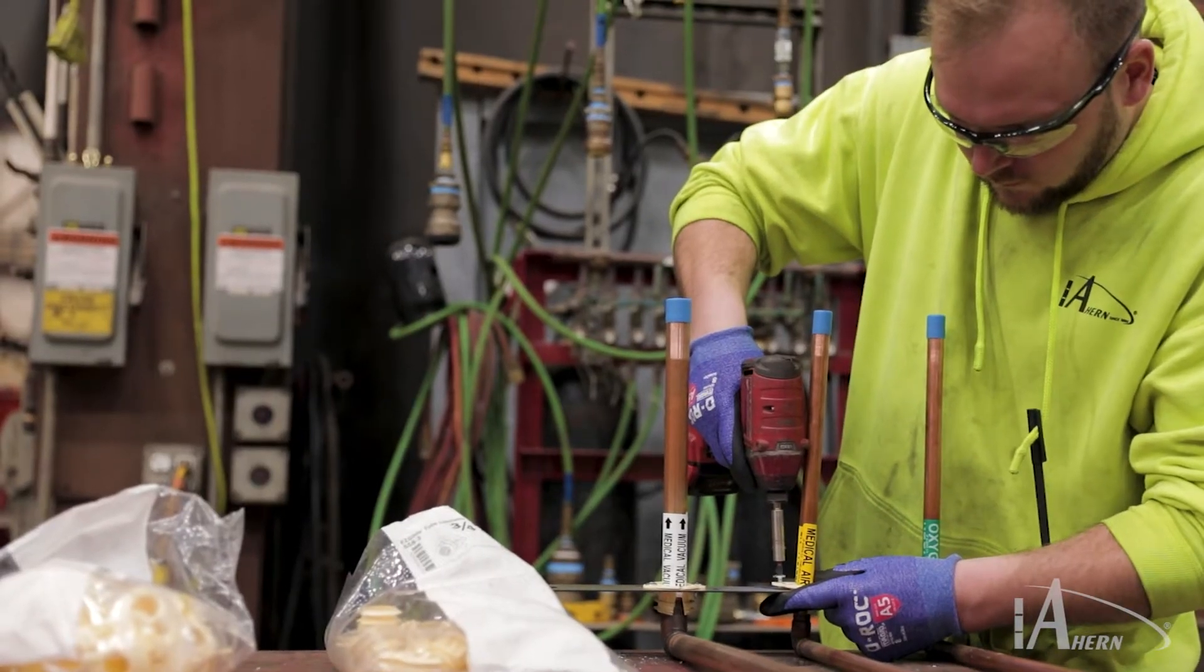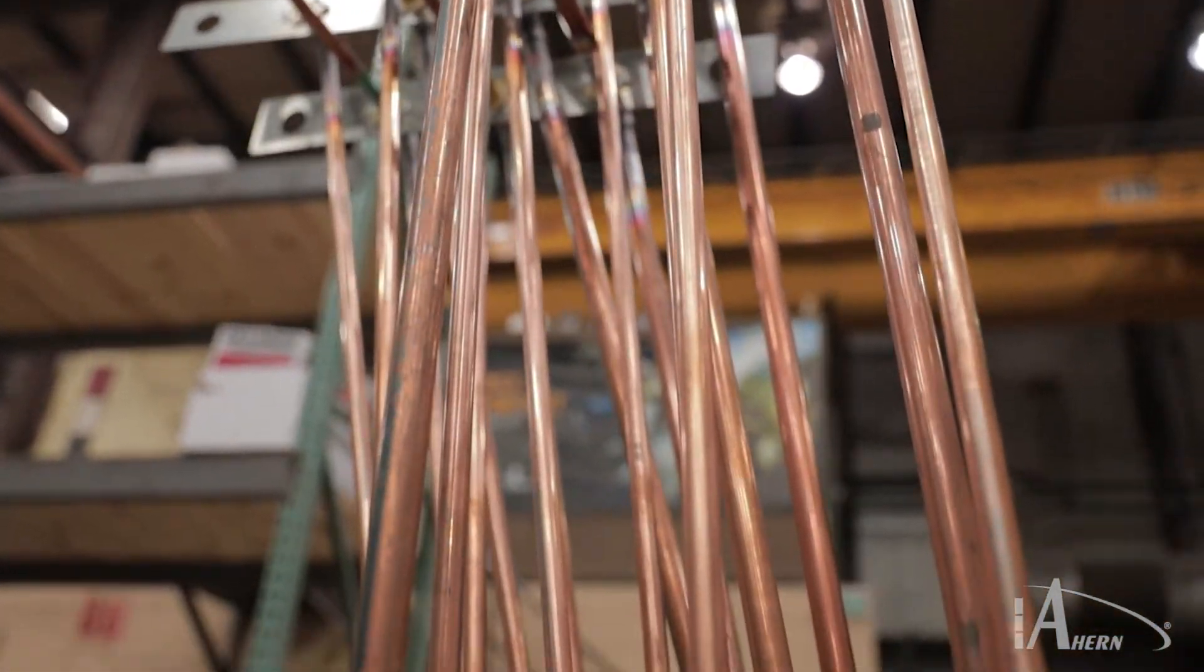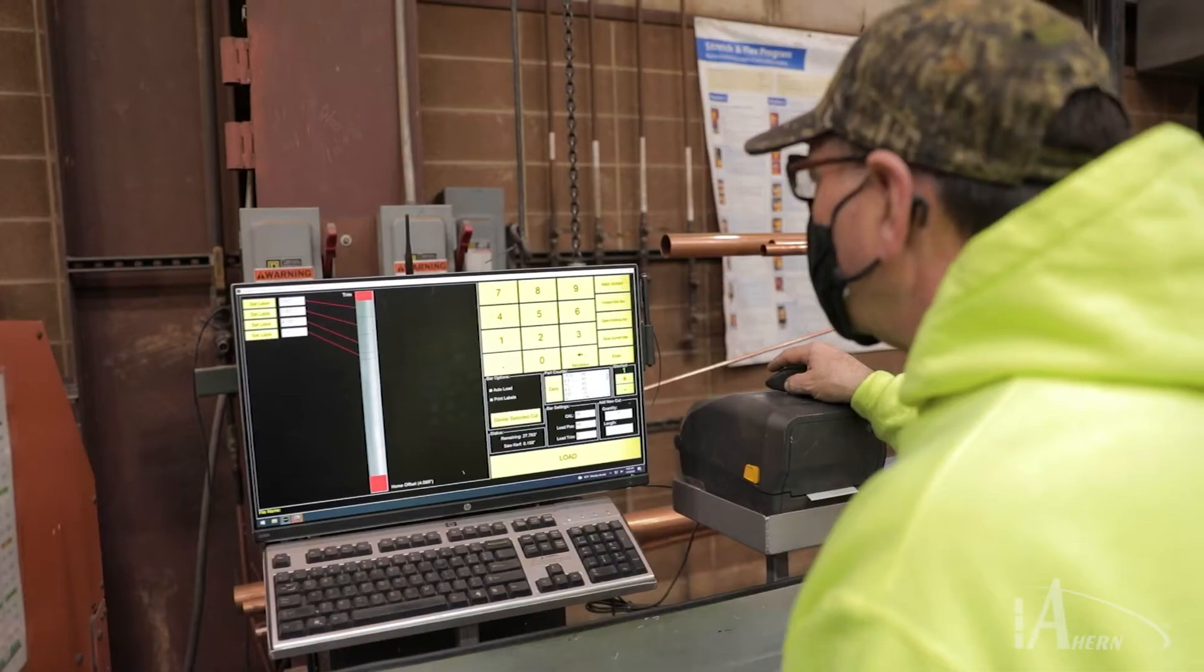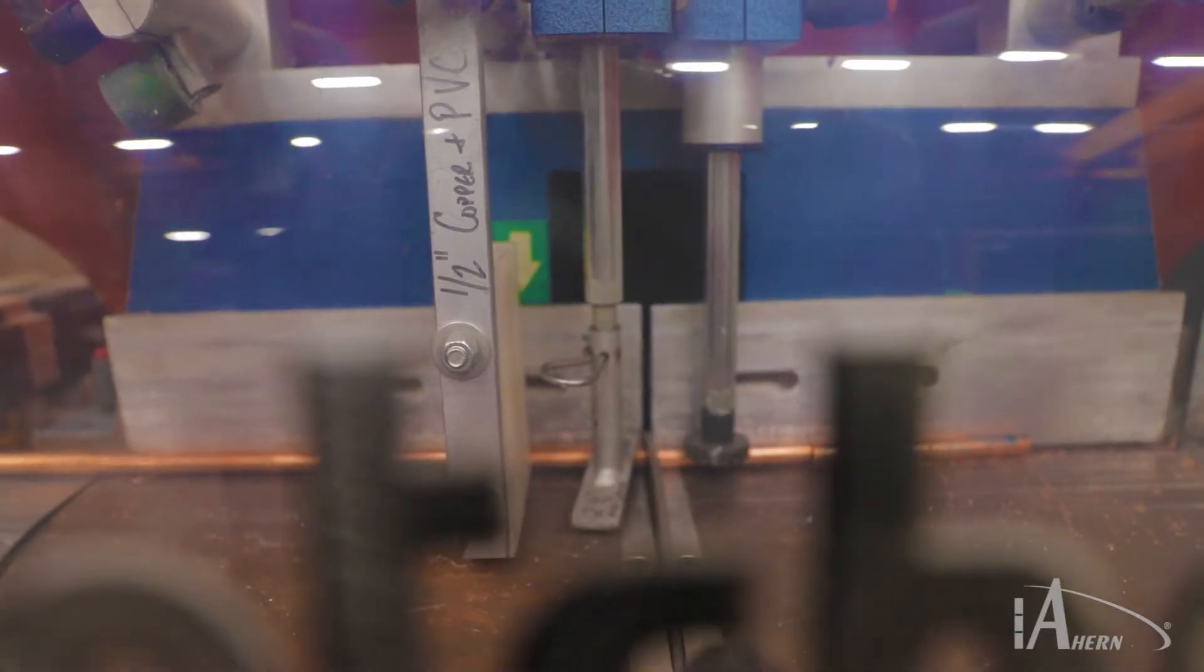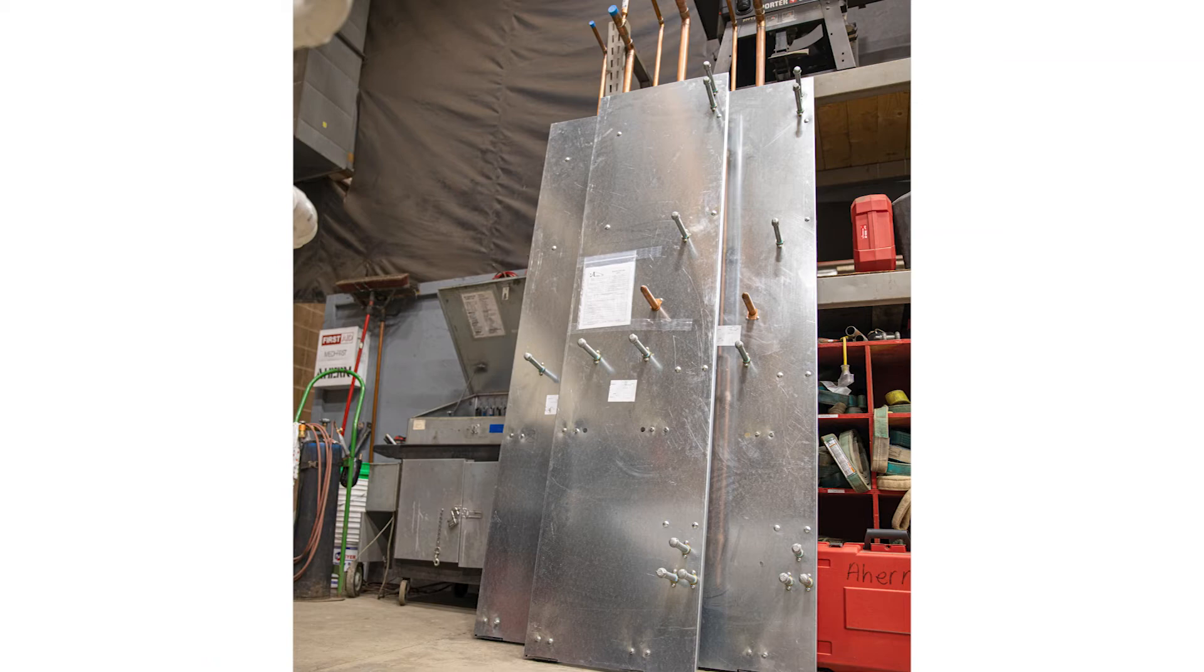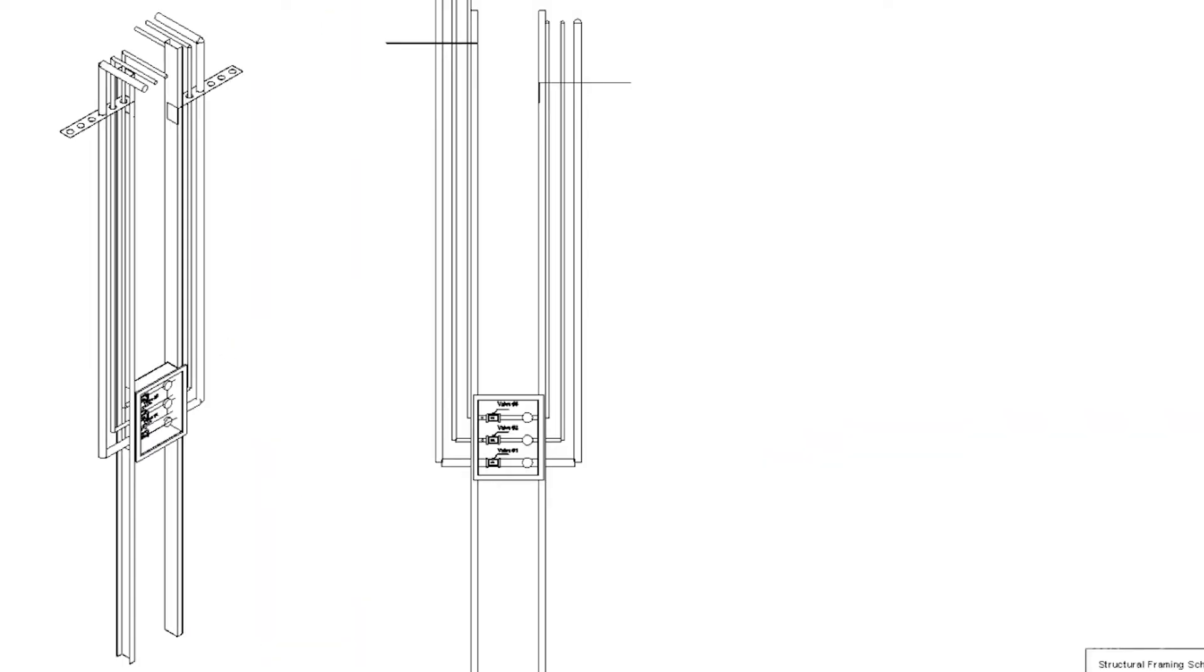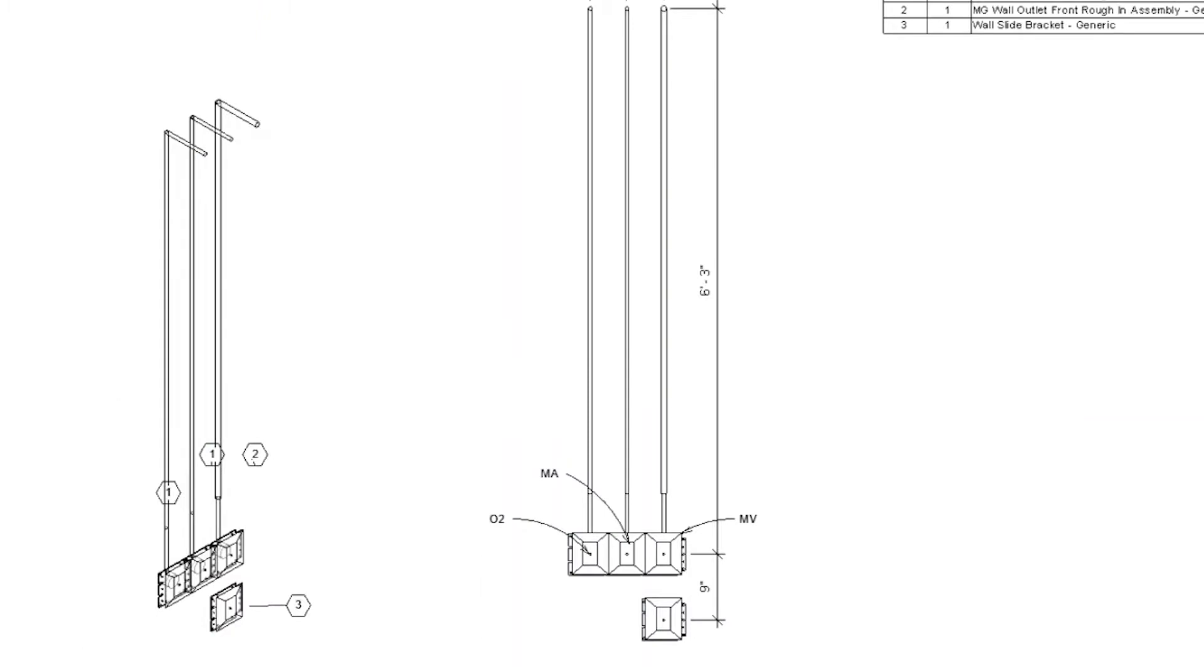Following the coordination and sign off of areas of the building, we begin the process of generating fabrication drawings for our shop to build portions of the systems off-site. This includes such items as showers, clinical service sinks, backflow preventer racks, dome bell boxes, and med gas outlets.